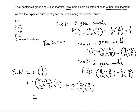Simplifying: the first term is 0. For the second term, 8 over 12 simplifies to 4 over 3, so 2 times 1 times 4 over 3 times 4 over 11 gives 16 over 33. For the third term, 2 times 4 times 7 gives 28 over 33. Adding these: 16 over 33 plus 28 over 33 equals 44 over 33. Dividing both numerator and denominator by 11 — the greatest common factor — reduces it to 4 over 3.